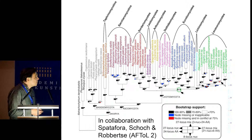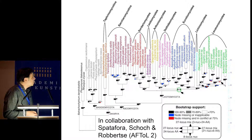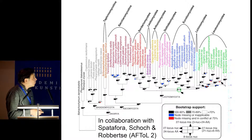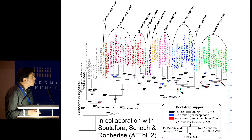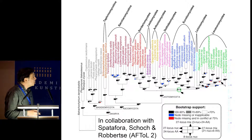A tree based on 27 loci, done in collaboration with Joey Spatafora, Conrad Schoch, and Barbara Robbertse as part of AFTOL II, for the first time allowed us — with high support — to resolve the Leotiomyceta radiation. Every black box indicates that one of the analyses strongly supported that node.